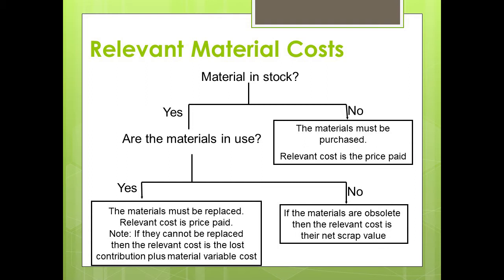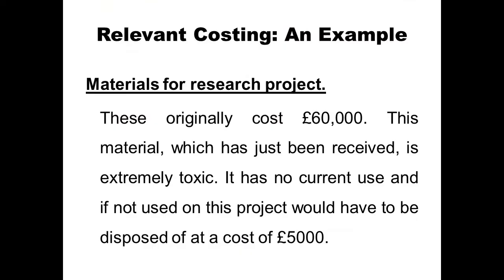So think about: if material is in stock and not in use — if the material is obsolete — then the relevant cost is the net scrap price. We have something in stock which we haven't used and don't see a use for in the near future, then it has no cost. So the £60,000 in our scenario has no extra cost; we will ignore that in decision making.